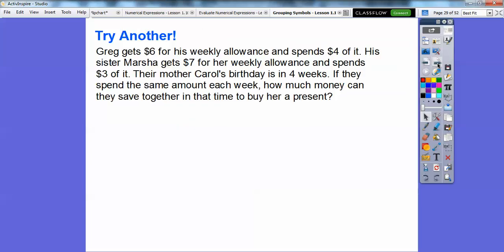Let's try another one. So Greg gets $6 for his weekly allowance and spends $4 of it. His sister Marsha gets $7 for her weekly allowance and spends $3 of it. Their mother Carol's birthday is in 4 weeks. If they spend the same amount each week, how much money can they save together in that time to buy her a present? So we're going to write an expression using parentheses and brackets.